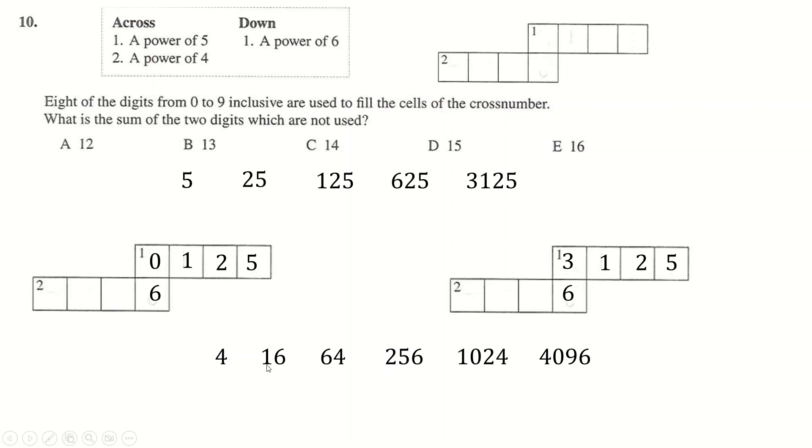The only ones that end in 6 are this one, but that would require doing 0016, which you can't do. This would require doing 0256, but you've already used a 0 here. So you could do 0256 here, but then you've got two 2s. And so here, 4096. Can't put it there because of the 0, but 4096 does work here. No digit is repeated. The only digits you haven't used are 7 and 8, and the total of those is 15. Excellent.